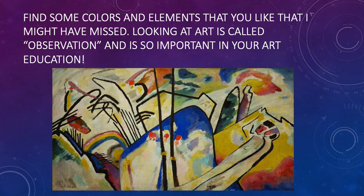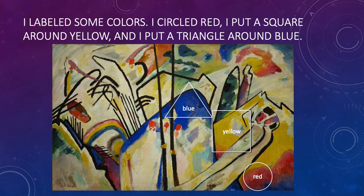Find some colors and elements that you like that I might have missed. Looking at art is called observation, and is so important in your art education. I labeled some colors: I circled red, I put a square around yellow, and I put a triangle around blue.